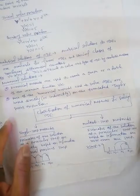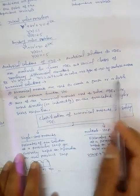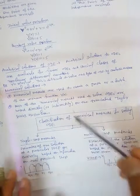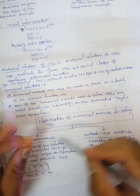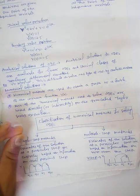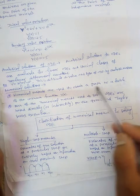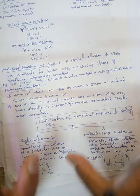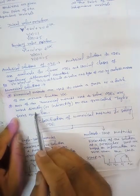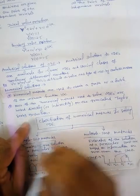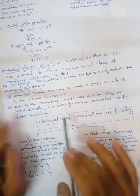Numerical methods are used to obtain a graph or a table of the unknown function. In the numerical solution we generally obtain a set of points which we join to get the approximate pattern of the solution, or we produce a graph or table. Most numerical methods used to solve ODEs are based directly or indirectly on the truncated Taylor series expansion.